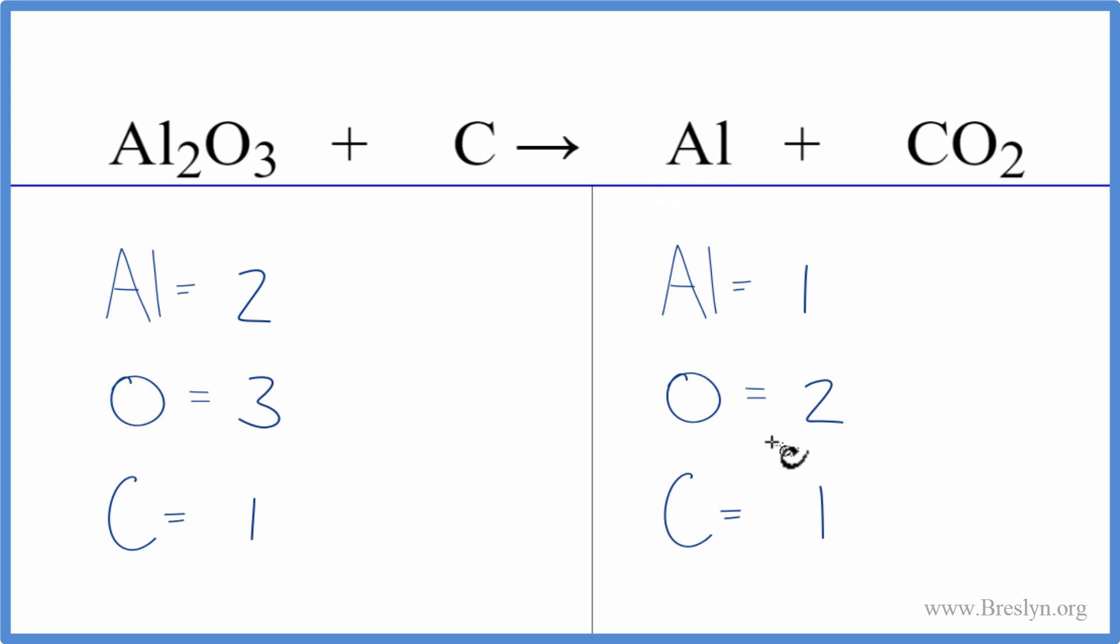We've got to deal with these oxygen atoms here. What I'd like to do when I have an odd number is get that to be an even number. So I could multiply this by two. I'll put a coefficient of two in front of the Al2O3. Three times two, that gives me six.